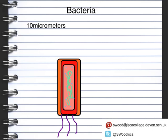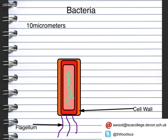One major difference is the flagellum — these are tail-like structures that allow the bacterial cell to move. Further up on the bacterial cell, we've got a cell wall, similar to a plant cell, which helps to maintain shape and stop the bacterial cell from absorbing too much water and bursting.